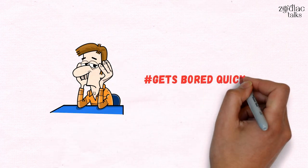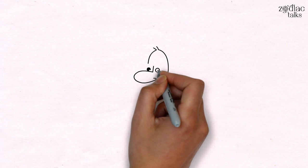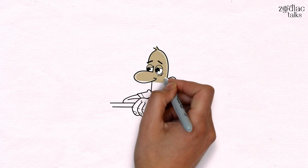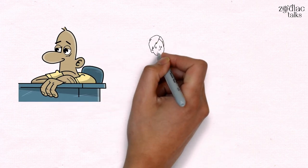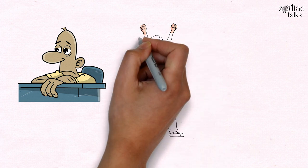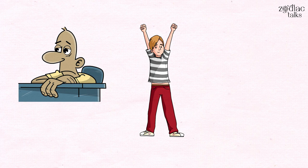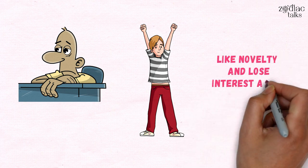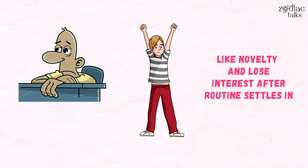Number 5. Gets bored quickly. Another important thing to consider about Aries is that they get bored quickly. As we said in the previous point, these natives get thrilled during the first encounters of their sexual relations. These natives like novelty and lose interest after a routine sets in.